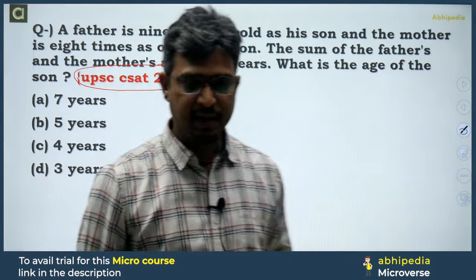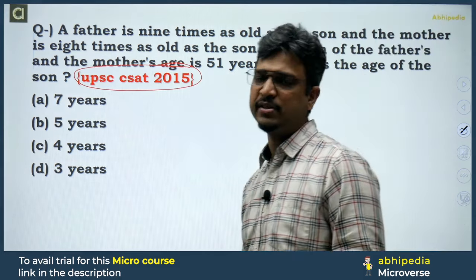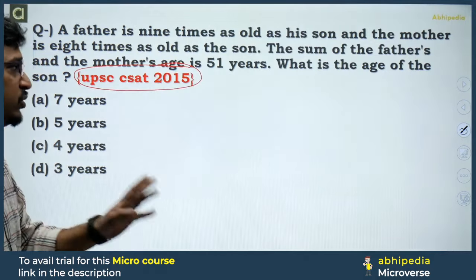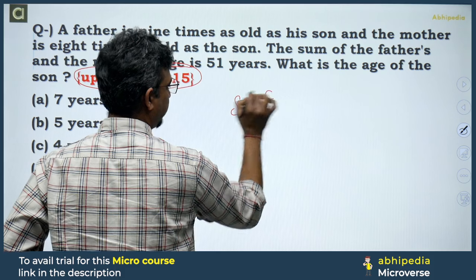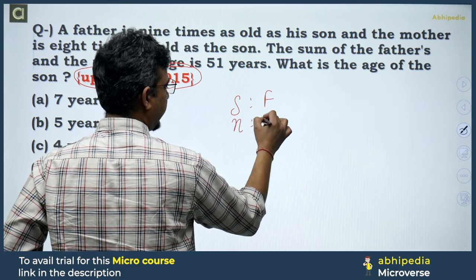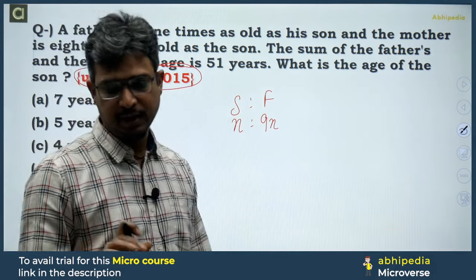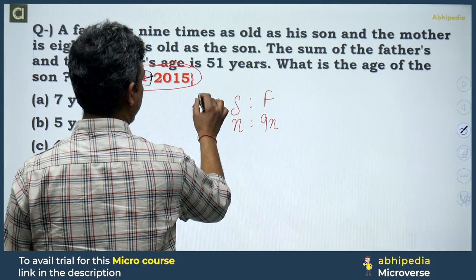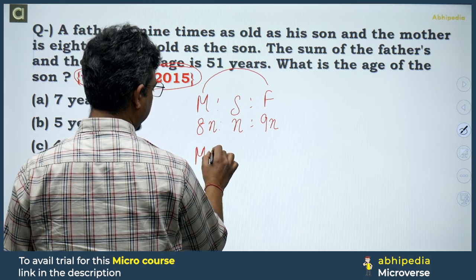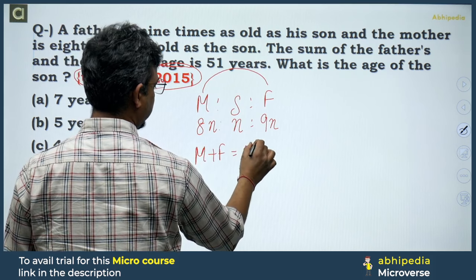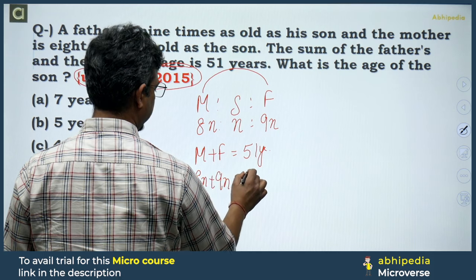This is the level of the question. There are two of them — and mother's age is 51 years. The variable level is clear. According to the question, mother plus father equals 51 years.